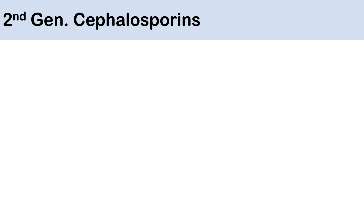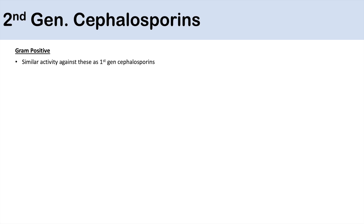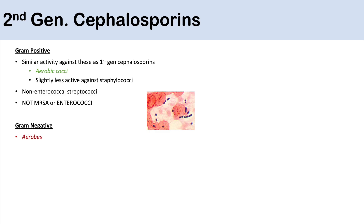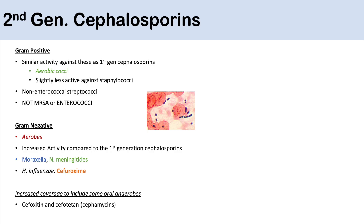Second-generation cephalosporins include cefotetan, cefuroxime, cefprozil, and cefoxitin. They cover gram-positive organisms very similarly to first-generation cephalosporins — aerobic cocci, with slightly less activity against staphylococci, and generally non-enterococcal streptococci. They have no coverage for MRSA or enterococci. However, they have increased activity against gram-negative bacteria compared to first-generation, covering Moraxella catarrhalis and Neisseria meningitidis. Most don't cover Haemophilus influenzae, except cefuroxime, which is special in that it covers H. flu.